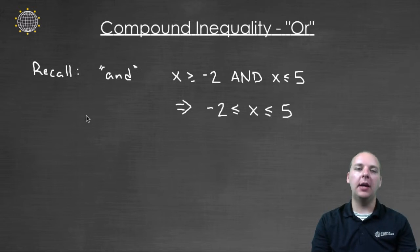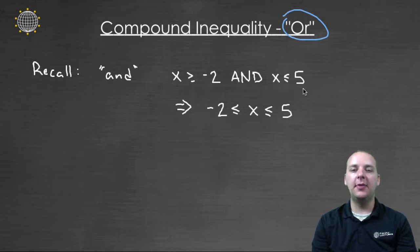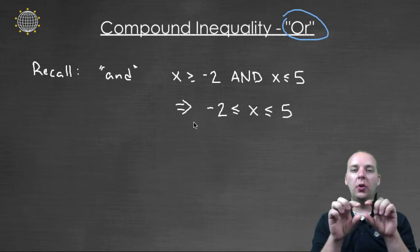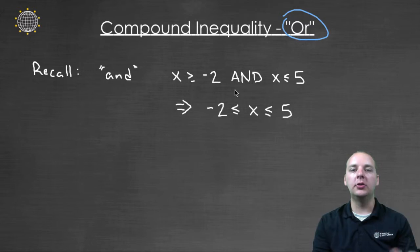Let me start by recalling a little bit from when we talked about the AND inequality, which will help us better understand OR inequalities. If we have an AND compound inequality, you'd have something like x is greater than or equal to negative two, AND x is less than five. There are x's that satisfy both — like one. One is greater than negative two AND one is less than five. You can actually combine these into one long string of inequalities: negative two is less than or equal to x, which is less than five.